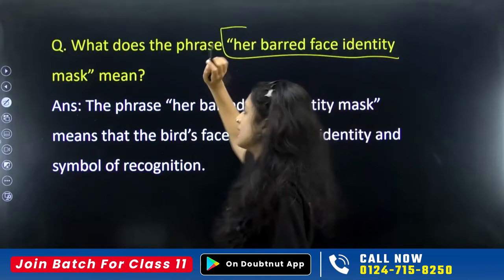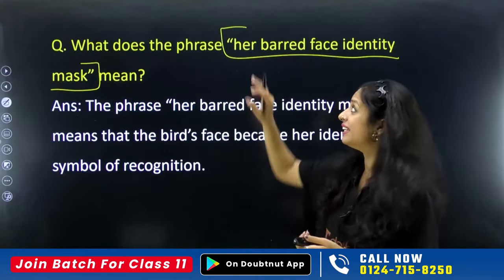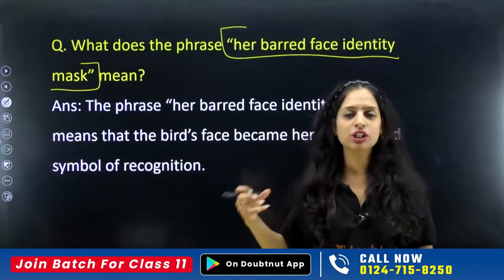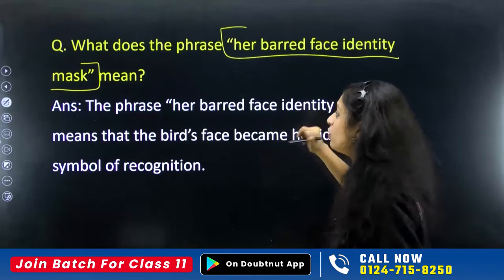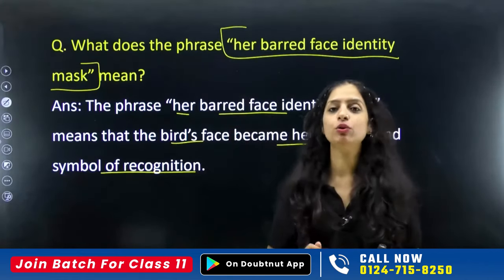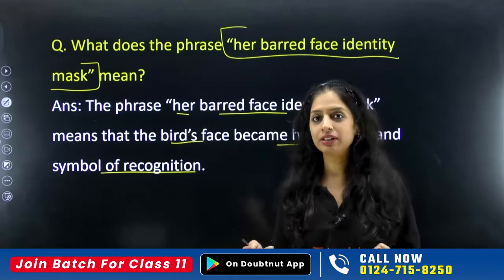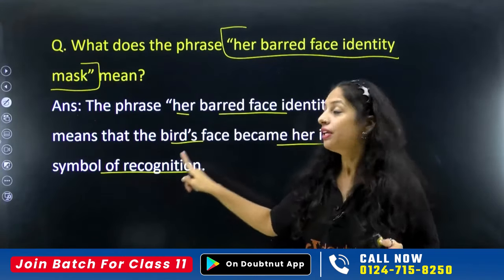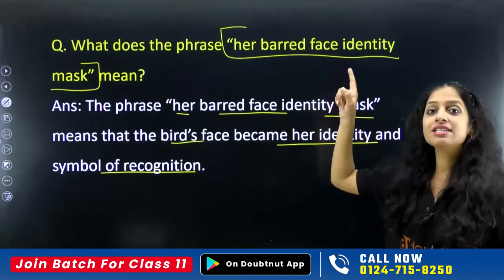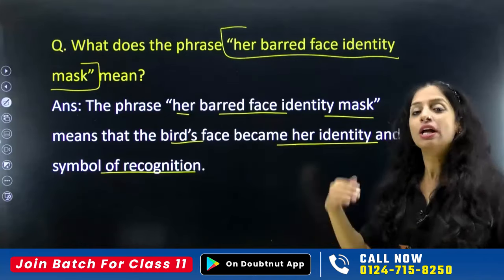What does the phrase 'her barred face identity mask' mean? The bird's face becomes her identity and symbol of recognition. Just as we recognize a person by their height, face features, and the way they walk or talk — similarly, the bird is identified by her face, with its yellow color and dark stripes. That face becomes her symbol of recognition — we remember and identify her by it.